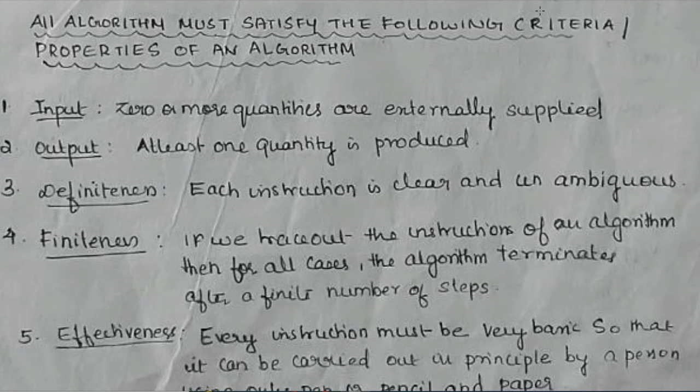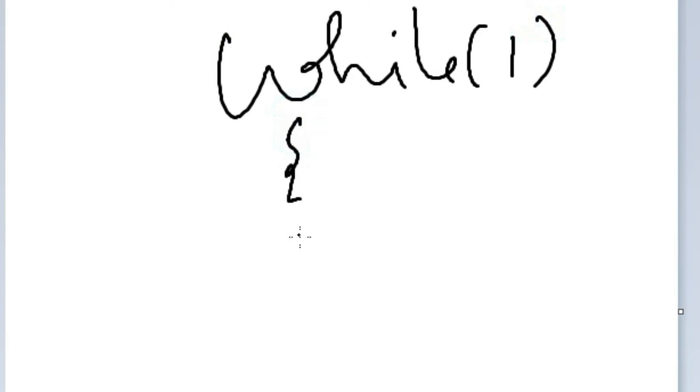Now, finiteness. If we trace out the instruction of an algorithm, then the algorithm must terminate after a finite steps. The steps must be countable also. Suppose you are writing while 1 and you are giving some statement to get printed in it. It will be an infinite loop and it is not going to end until you forcefully terminate it. If you are not getting any output, then what is the use of using such type of algorithm?